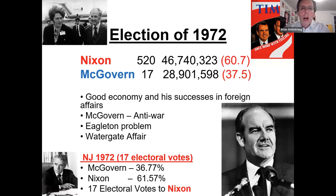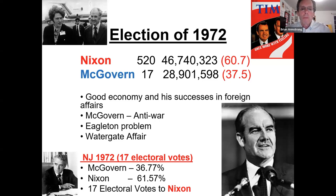Even if Nixon had done not much of anything, he still would have won big against McGovern, who was not a strong candidate. Nixon had successes in China and Russia, and Vietnam was winding down. McGovern's first VP candidate Eagleton had a problem with mental illness, causing a scandal. Nixon wins very big in New Jersey with 61%, but the Watergate affair would come the next year.